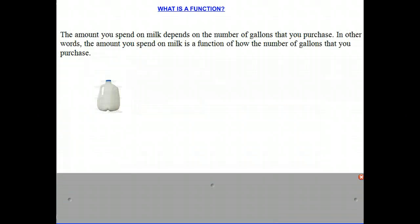Let's look at an example. The amount you spend on milk depends on the number of gallons that you purchase. In other words, the amount you spend on milk is a function of the number of gallons that you purchase. For example, let's say milk costs $3.50 a gallon. That's how much that one milk would cost.